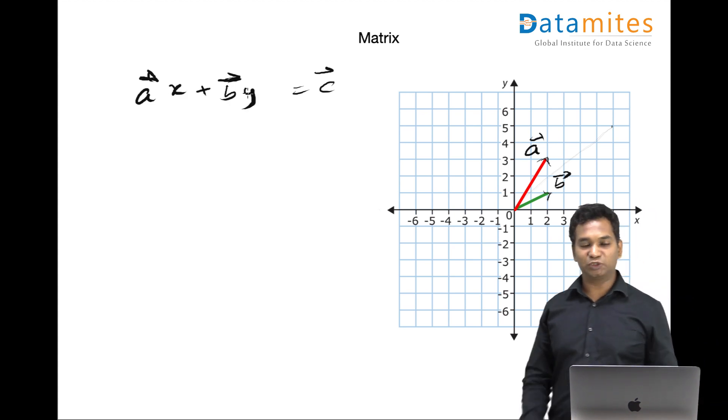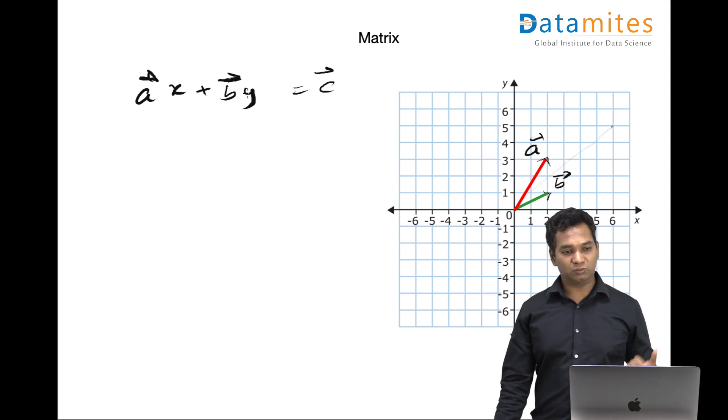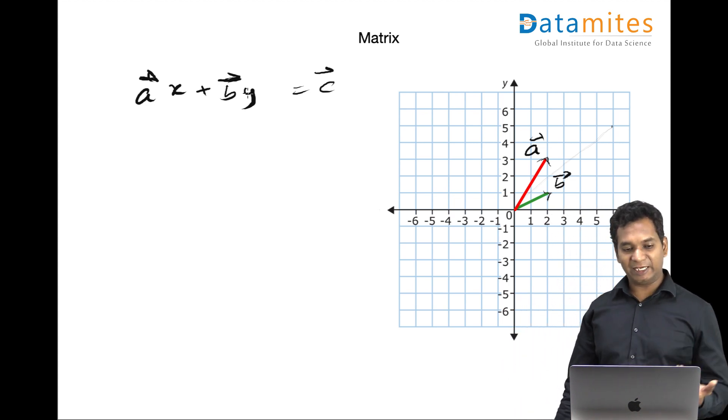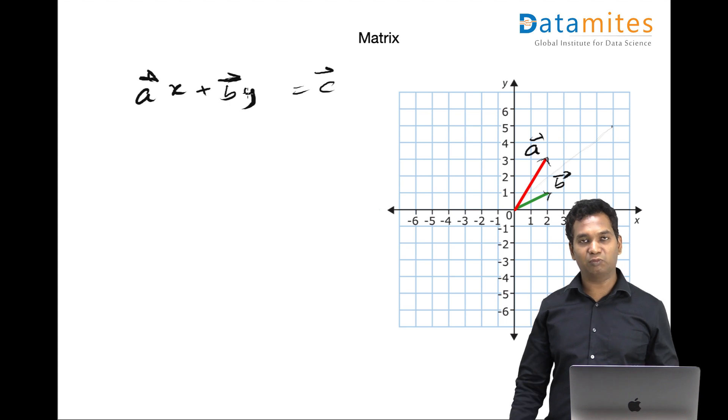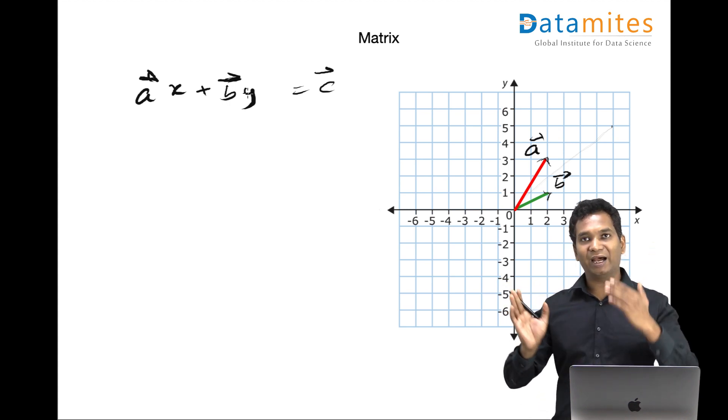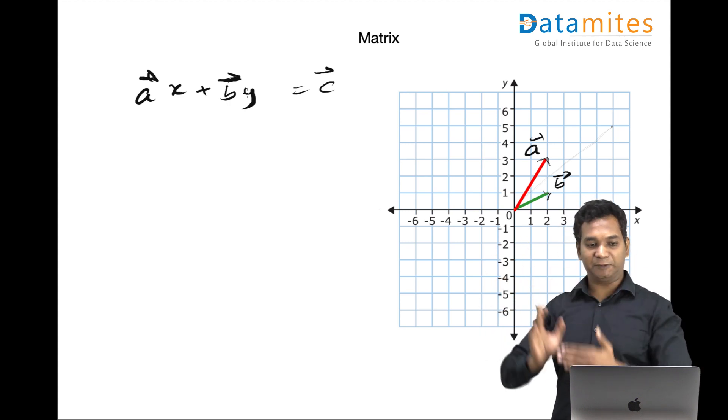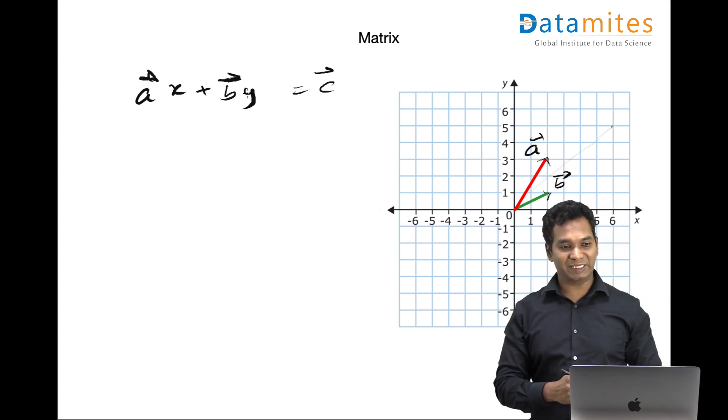So I'm scaling up a vector by x and b vector by y and then doing a vector addition, right? And that gives you c.